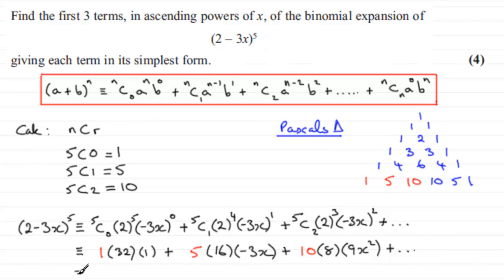So if we write this out now in ascending powers of x, the first term is just simply 32. Now, if we work out the next term, don't charge in and write a plus, because you can see it's a minus here.